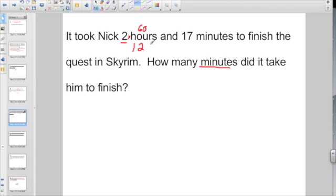So two times 60 would be 120. Go and add on your additional smaller units. 120 plus 17 more. Hey, that's going to give us 137 minutes.